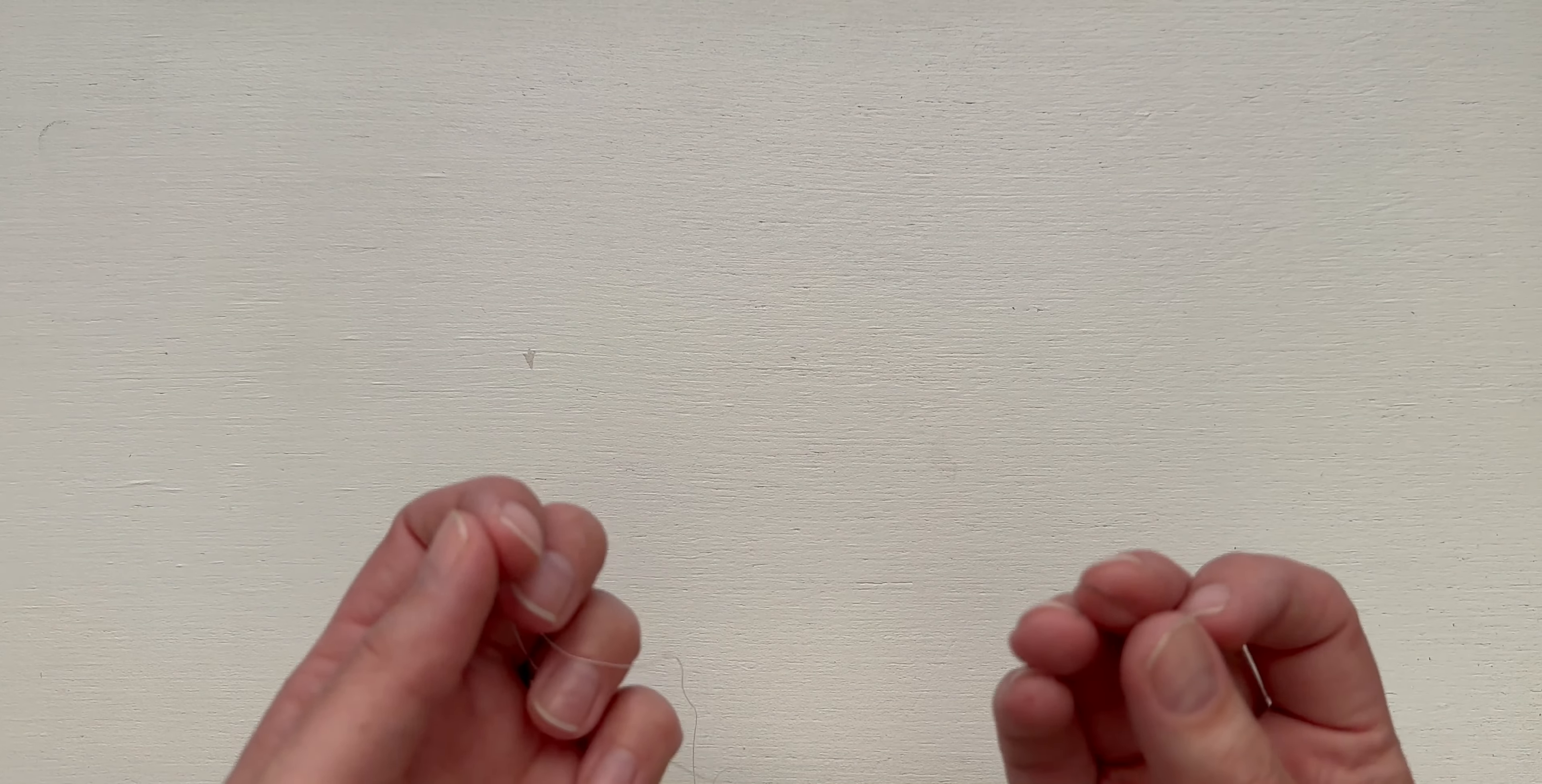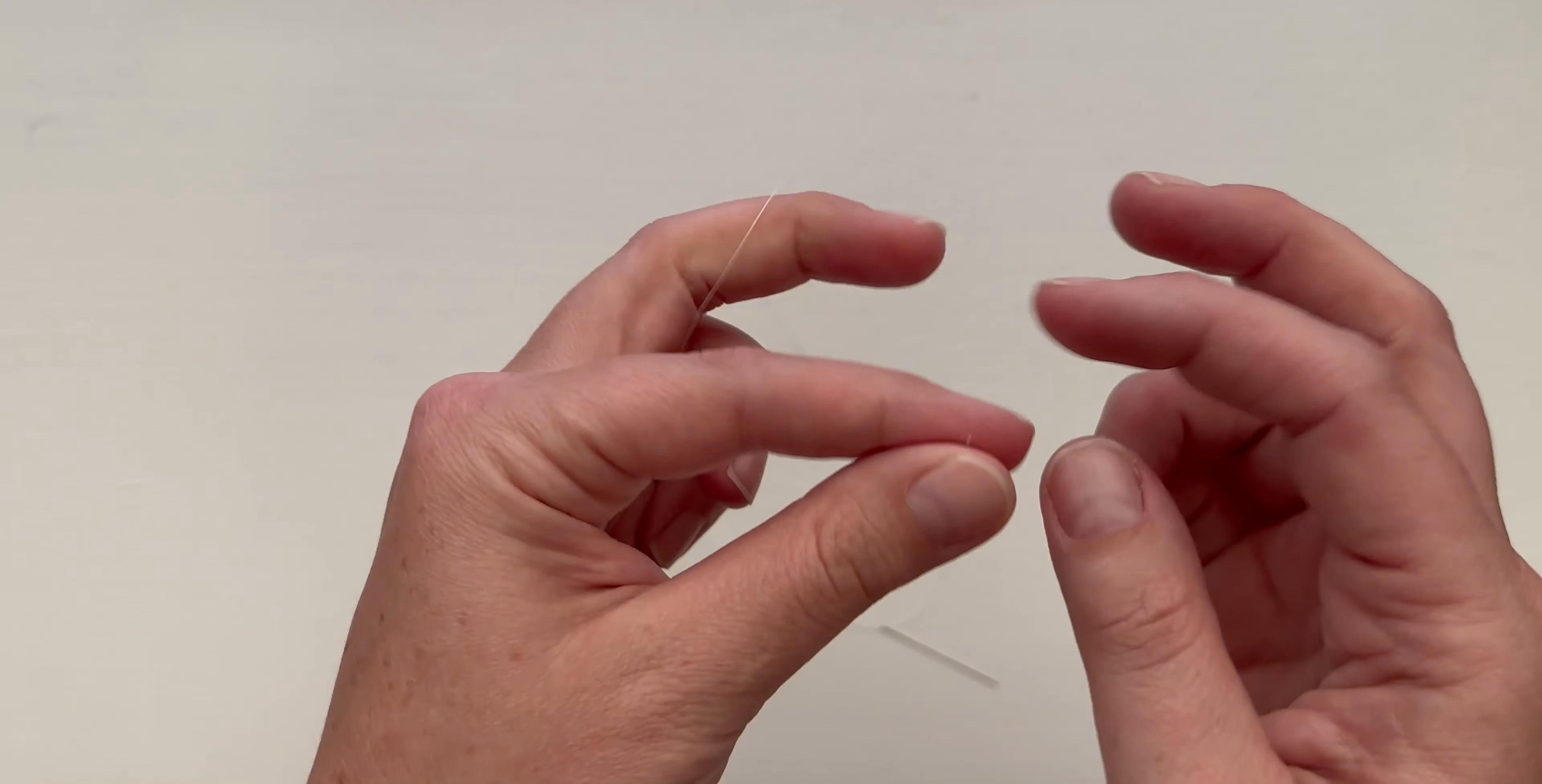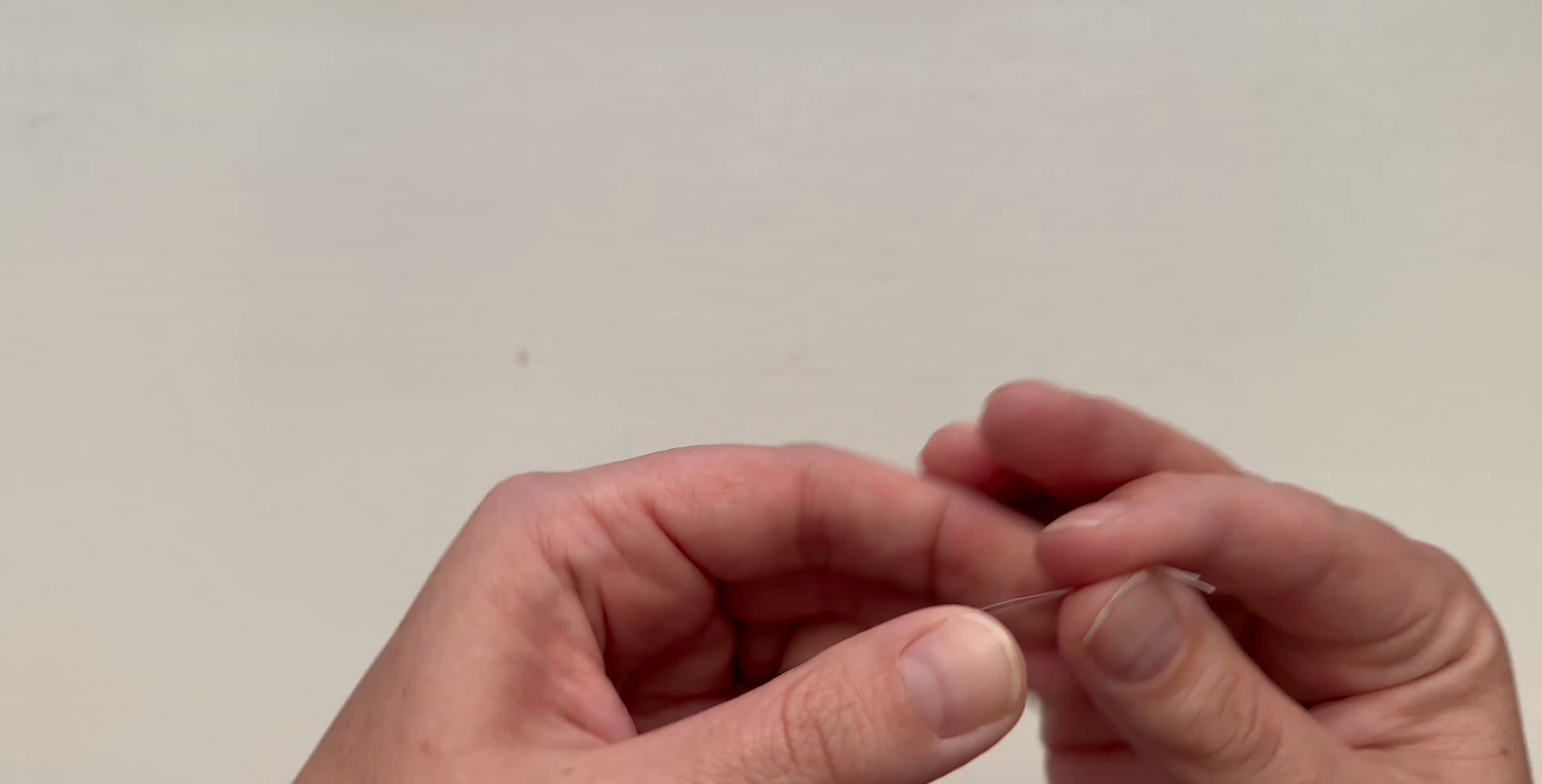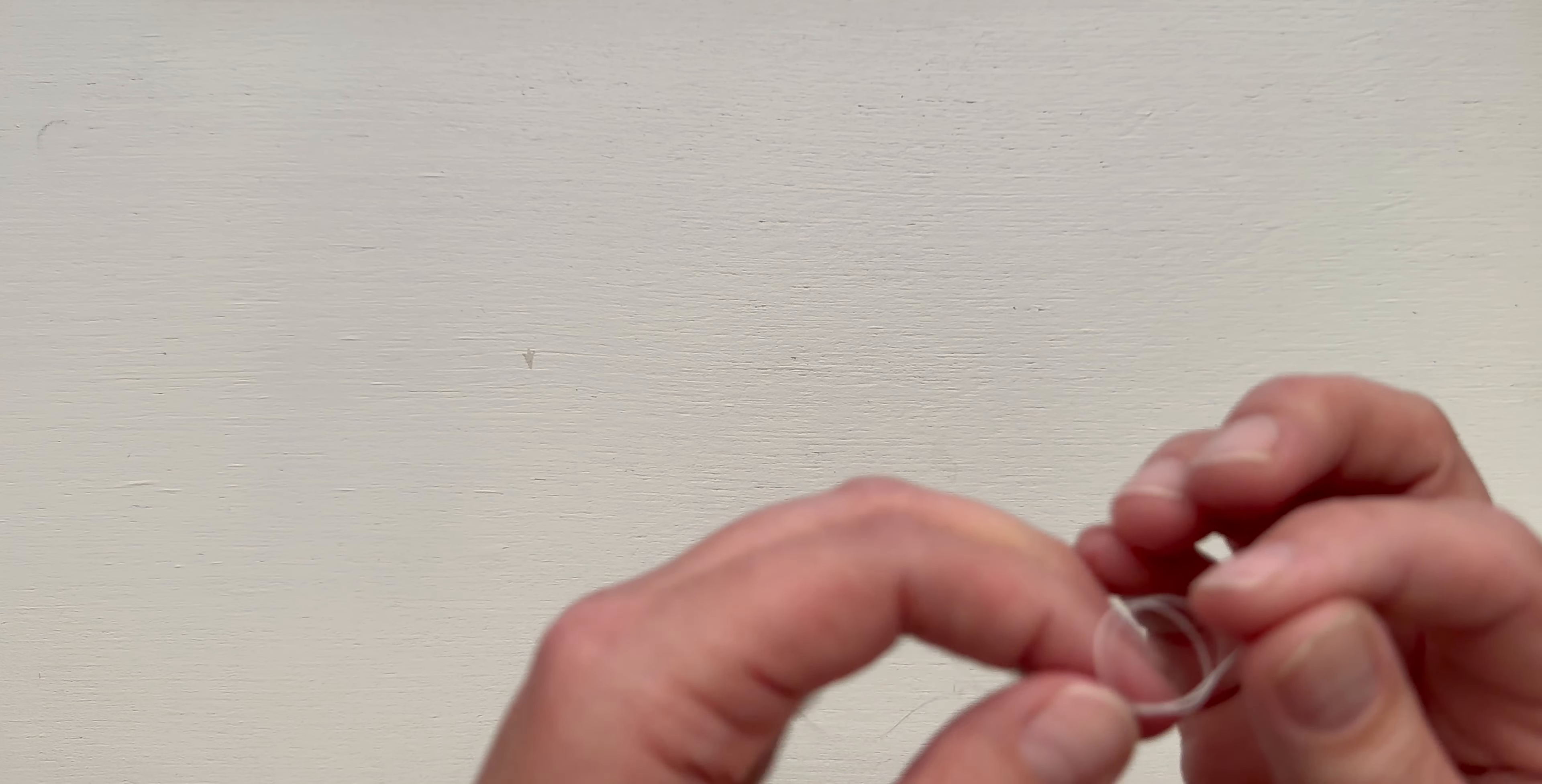When you thread your needle for buttons we really want it to be secure, so we want to make sure that we use our doubled up thread like we talked about when we talked about threading our needle. So I'm going to double my thread up. I'm going to loop it and create my double knots at the end.